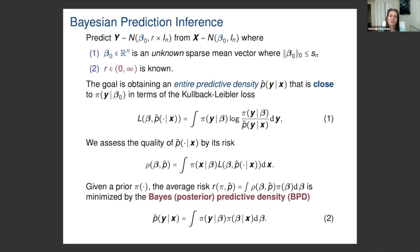The model involves l-zero sparsity, where we have up to s_n non-zero elements and n minus s_n zero elements, with n going to infinity, s_n going to infinity, and s_n over n going to zero. It's a high-dimensional estimation problem. Over the last decade we have been trying to understand estimation procedures for beta, and under sparsity restrictions we know a lot about the performance of posteriors and modes like LASSO for estimating beta-naught.